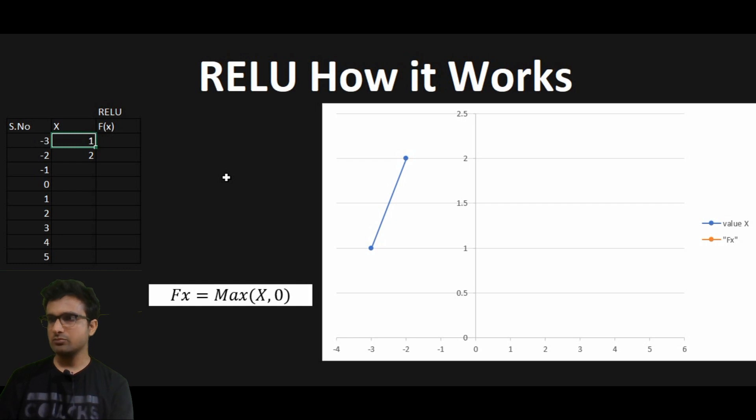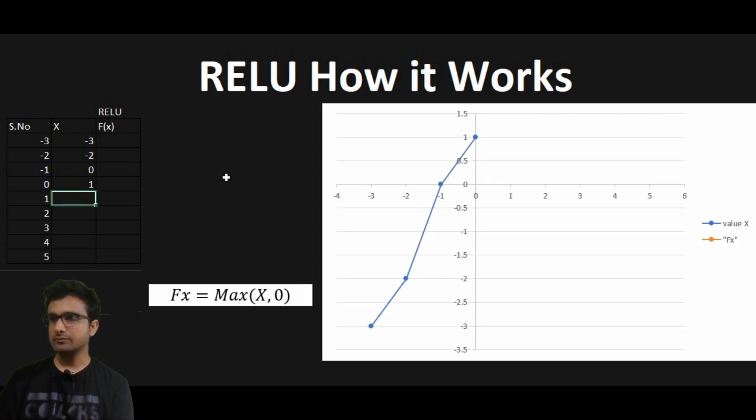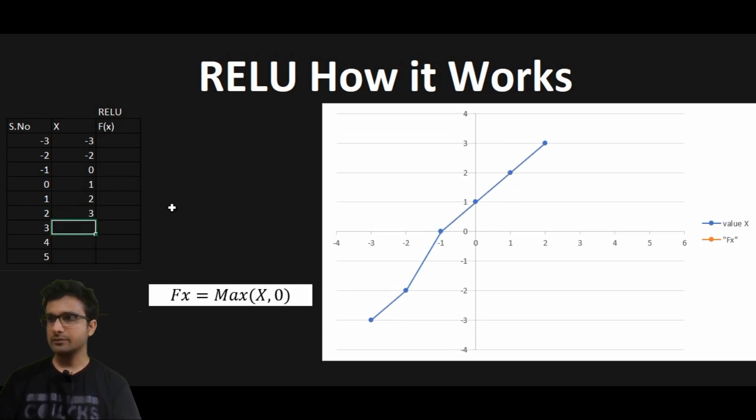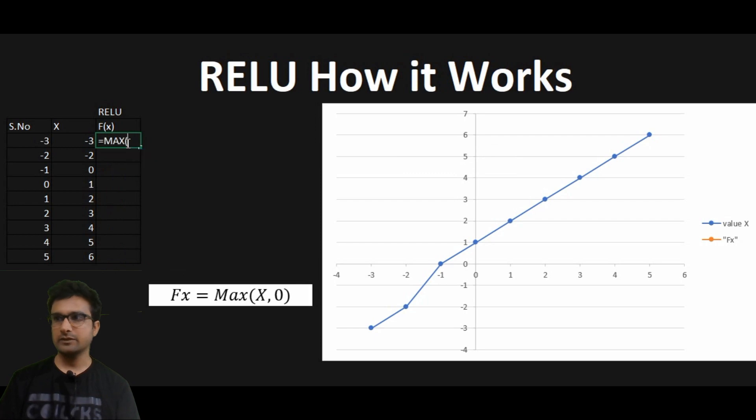I am going to give some low values like minus 3 here, minus 2 here, 0 here, 1 here, then 2 here, 3, let me just pull this down, 4, 5, 6. Now let me apply the function max of this x comma 0.